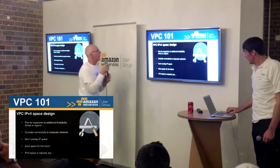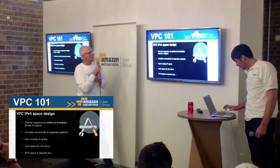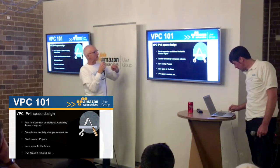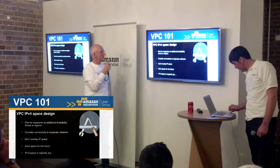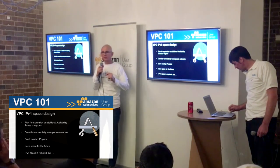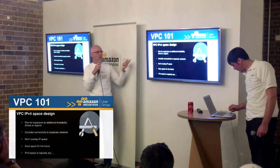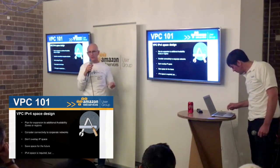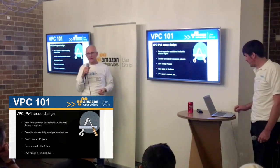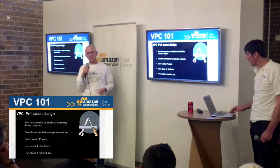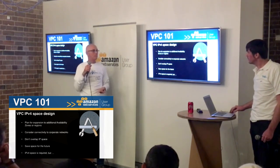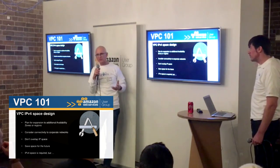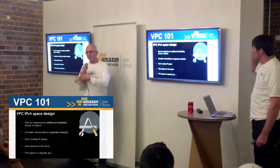So, plan for expansion. You're going to create your subnets. If you've got a slash 16 CIDR block, you've got 65,000 IP addresses to play with — that's normally enough. Don't be too stingy with your IP addresses and subnets, but also don't be too big.